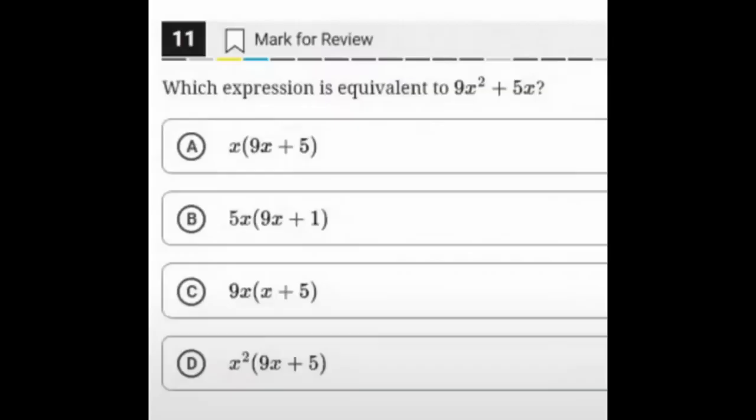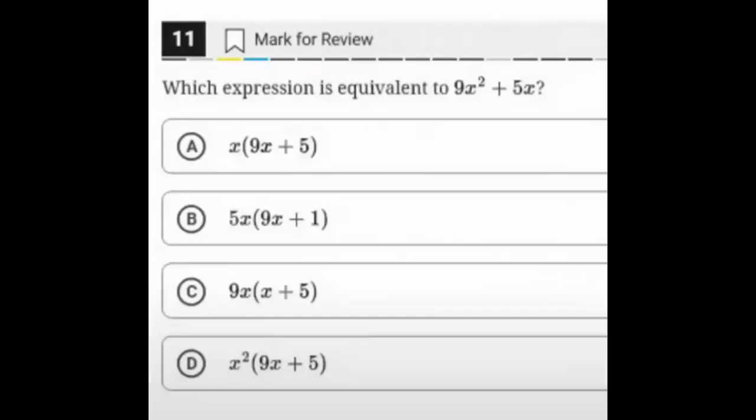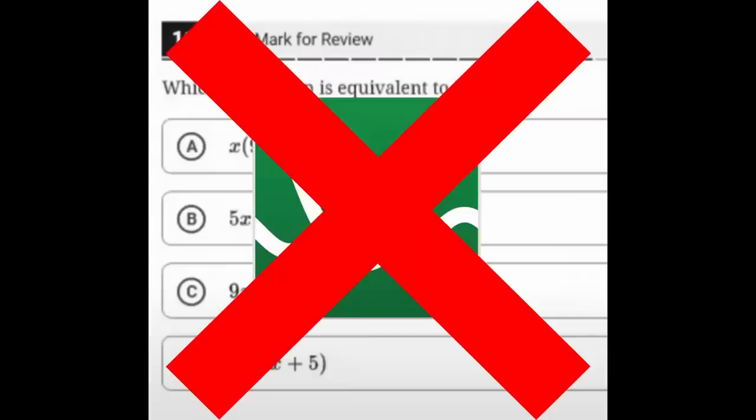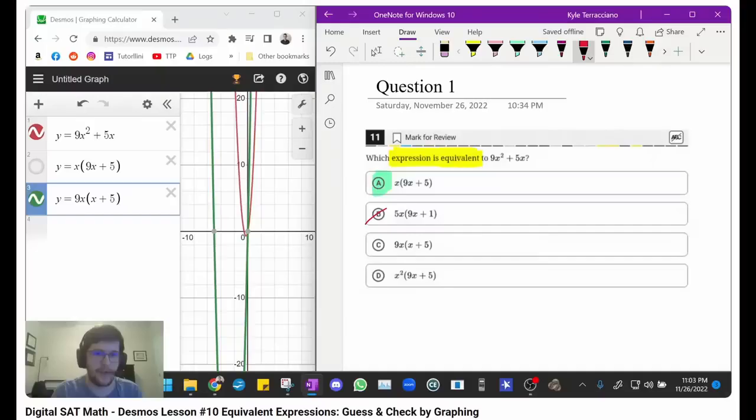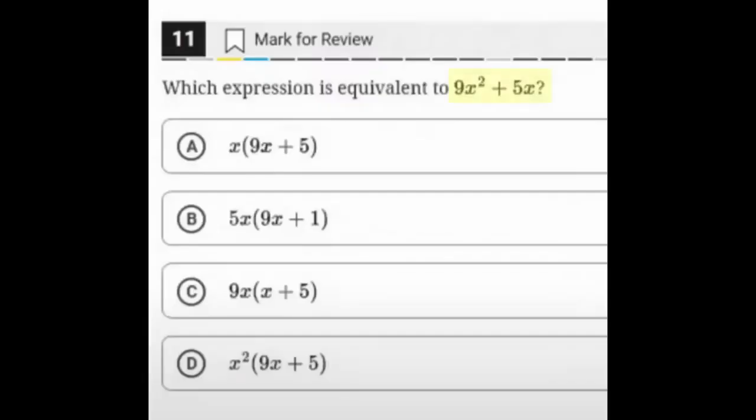You know it's an equivalent expressions problem when it asks you which expression is equivalent to this, and this is definitely not a problem type you should use Desmos for. Is it technically possible? Yes. Is it optimal? No. Please, for the love of God, just learn how to factor and do algebra. It comes in handy on so many different parts of the SAT, so just learn it and get used to it. The greatest common factor of this expression is x, so the answer is the one that factors out x. It's that simple. You don't need to plug in every single answer choice to figure that out. You just need to give it five seconds of thought.